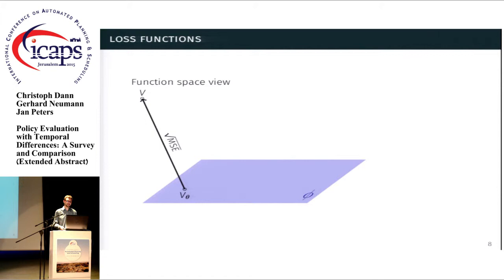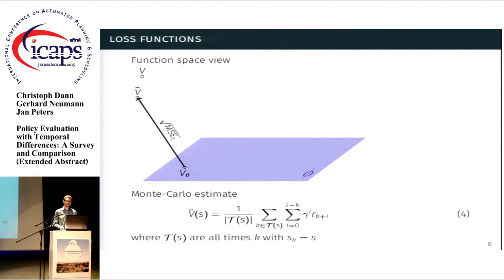However, we cannot evaluate it, so we build a sample approximation of it, which then amounts to basically the distance between the estimate that we have and the Monte Carlo estimate of our value function, which is basically taking the observed sum of discounted rewards that we have until the end or until the last times that we have seen, averaged over all occurrences of the state that we are evaluating.